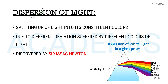Dispersion — splitting up of light into constituent colors. Light splits into 7 colors. Because we are seeing scattering of light, they are constant colors: violet, indigo, blue, green, yellow, orange, red — we are seeing dispersion.